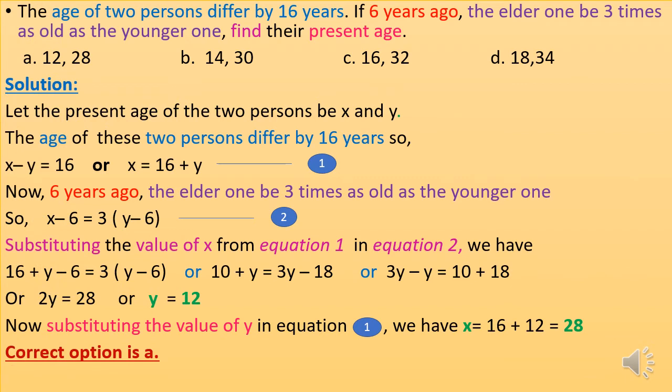The age of two persons differ by 16 years. If six years ago the elder one was three times as old as the younger one, find their present ages. Let the present ages of the two persons be x and y. Since their ages differ by 16 years: x minus y equals 16, or x equals 16 plus y. This is equation one.